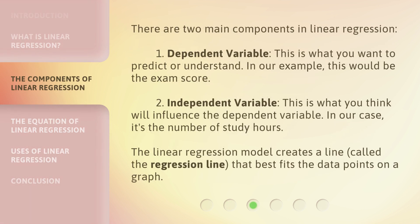There are two main components in linear regression. First, the Dependent Variable — this is what you want to predict or understand. In our example, this would be the exam score. Second, the Independent Variable — this is what you think will influence the dependent variable. In our case, it's the number of study hours.